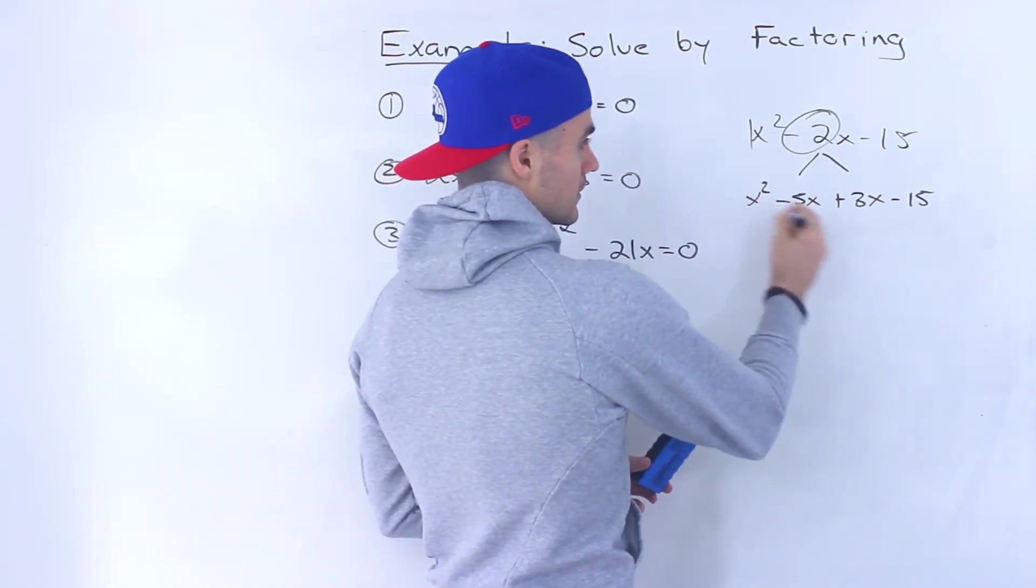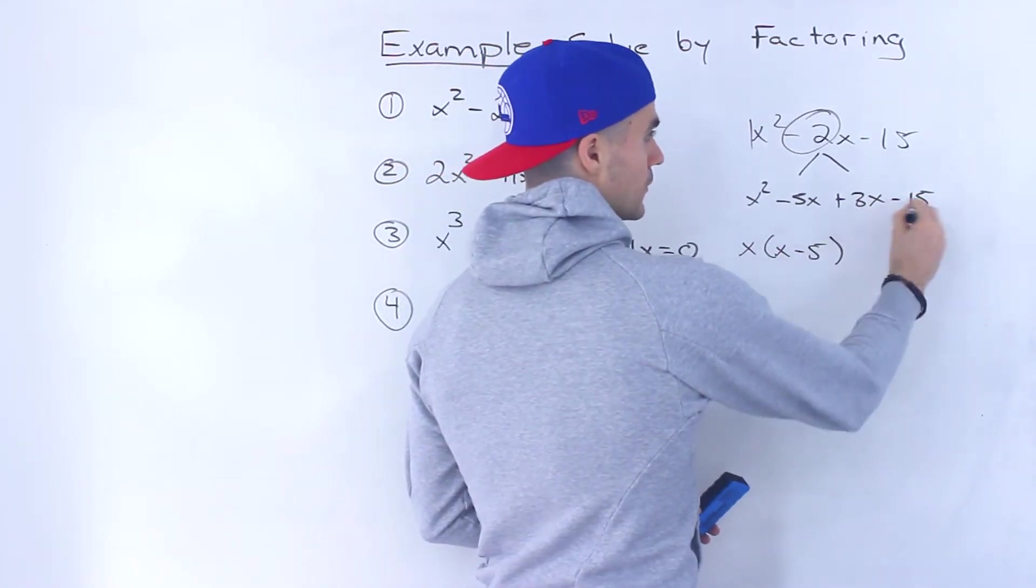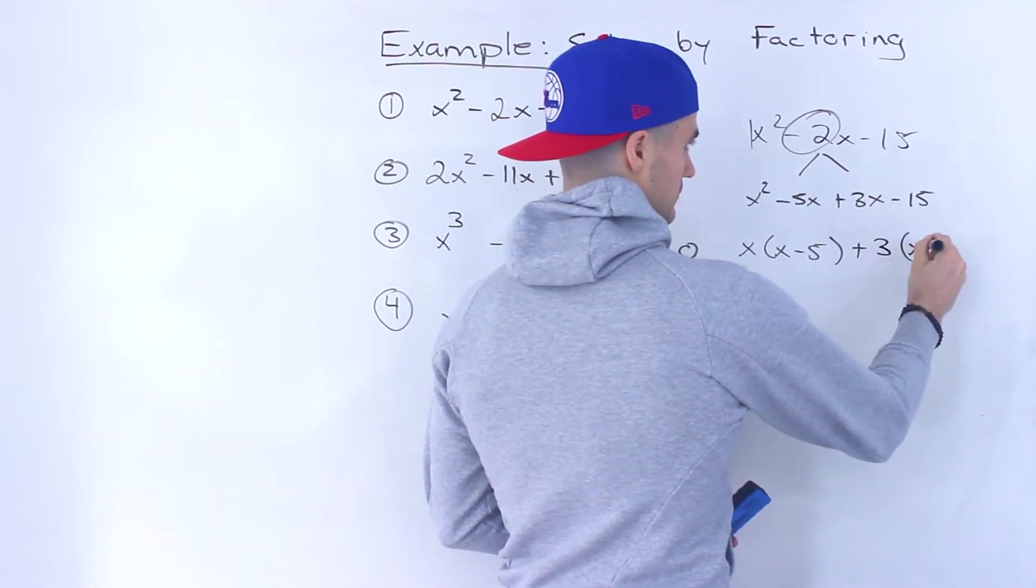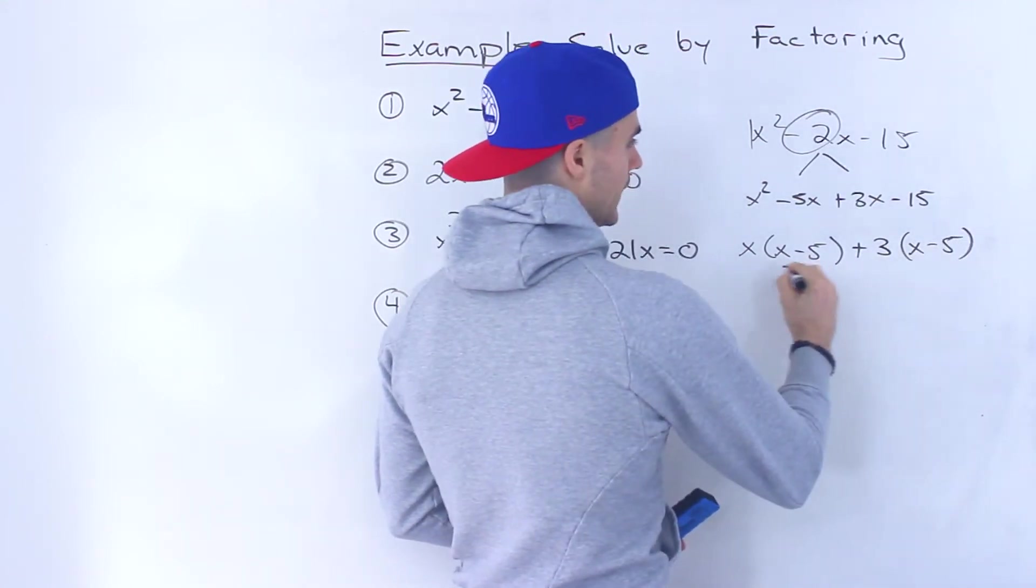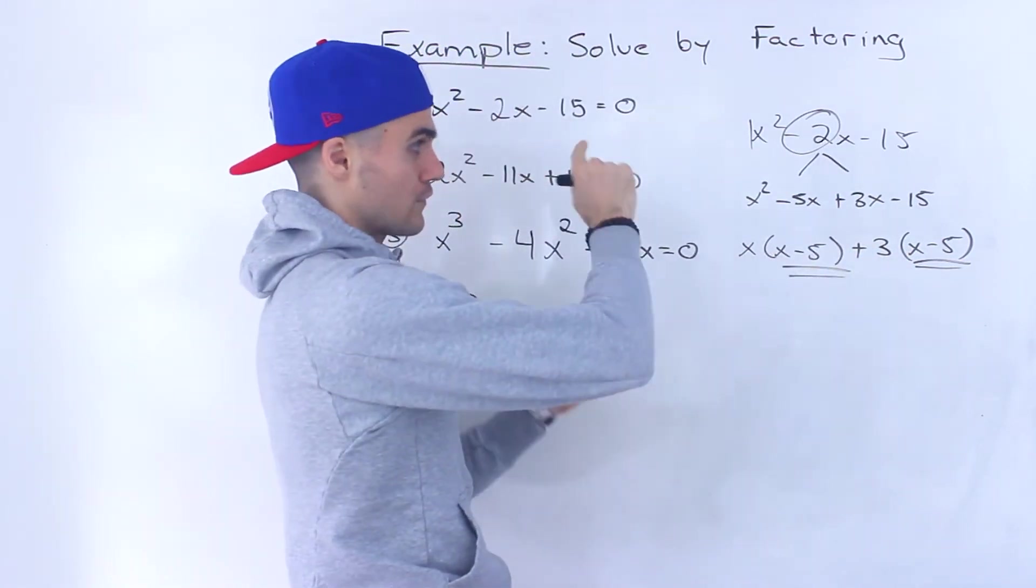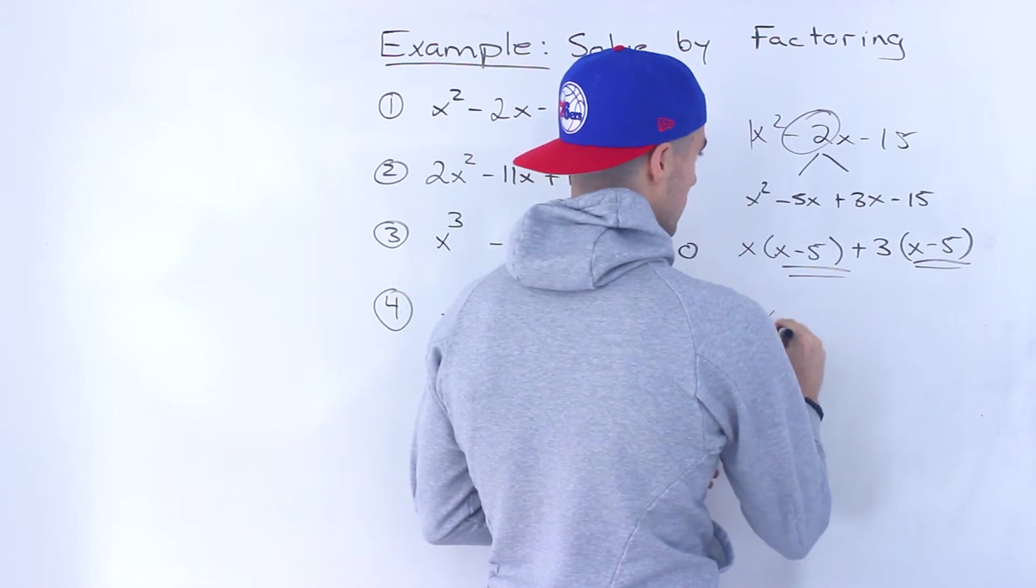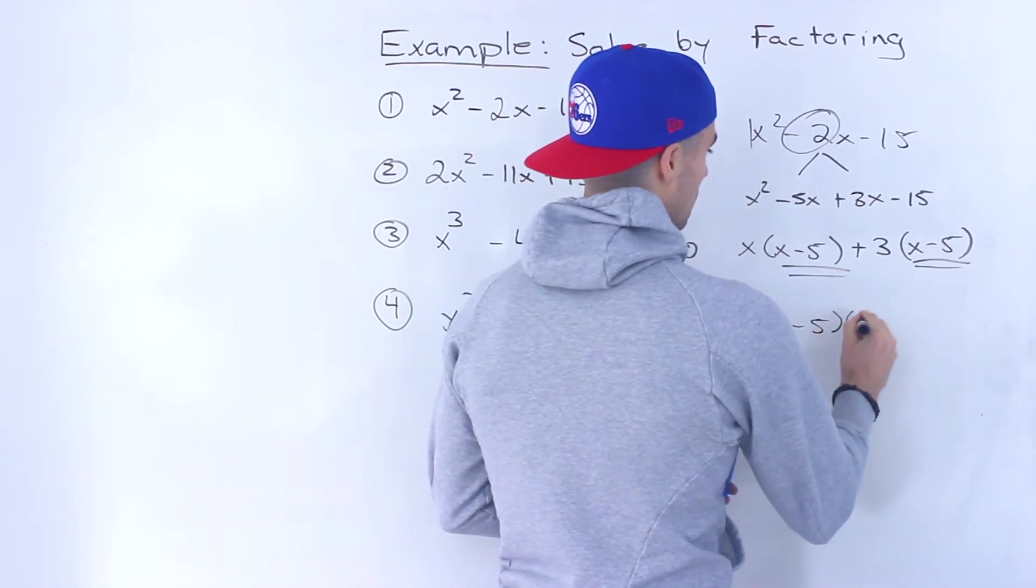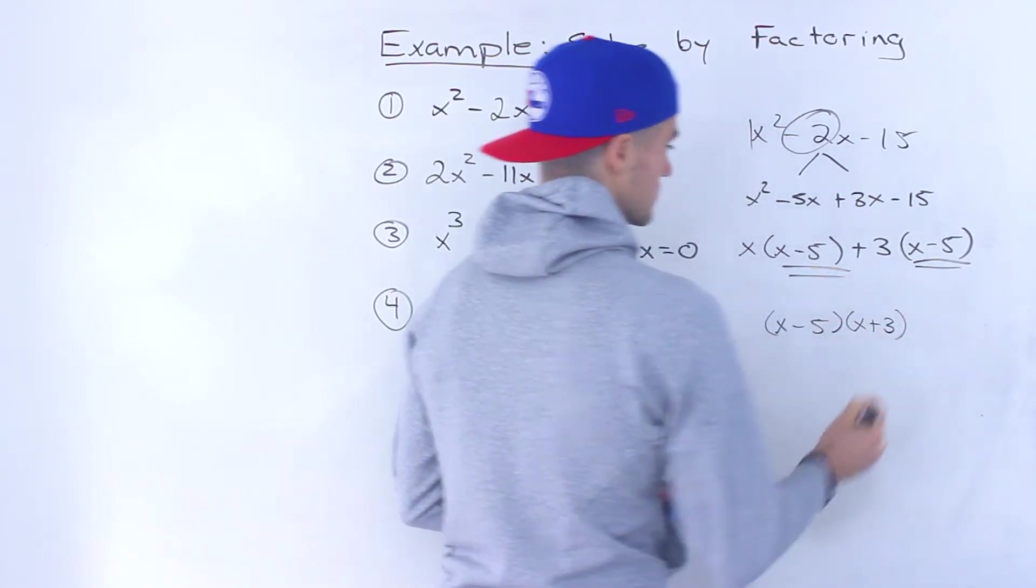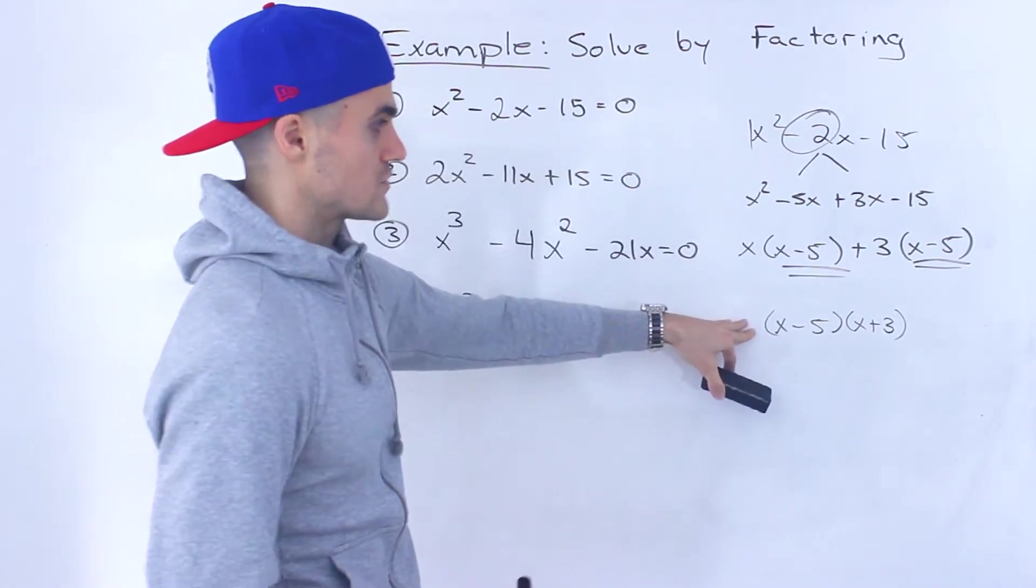Notice from these two we could take out an x, and then from these two we could take out a +3. These two brackets are the same. These two brackets should always be the same if a quadratic factors smoothly. So now we could take out the (x - 5) and we'd have (x + 3).